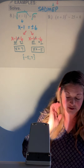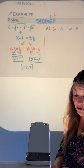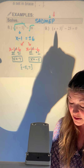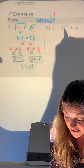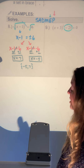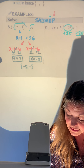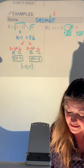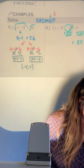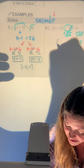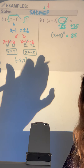For number 9, I notice addition and subtraction I can take care of first — not the x plus 3 inside the parentheses, that's protected. But I have minus 25, so I'll add it over to the other side. That'll leave (x plus 3) squared alone on the left with 25 on the right.